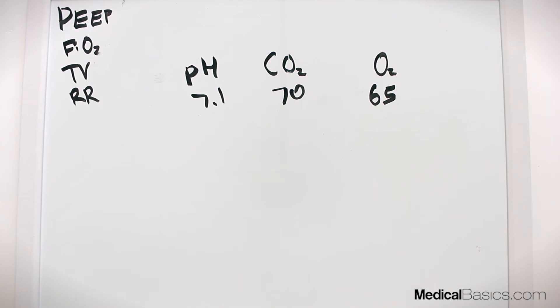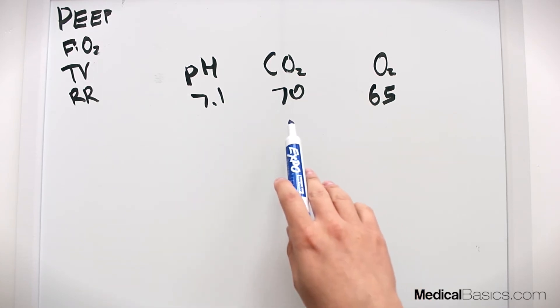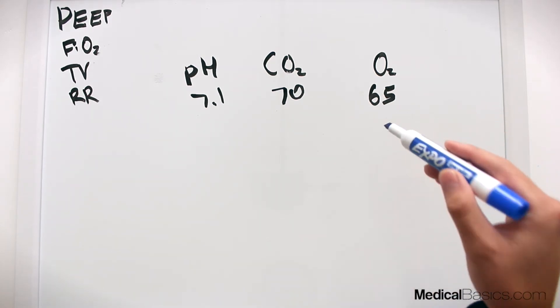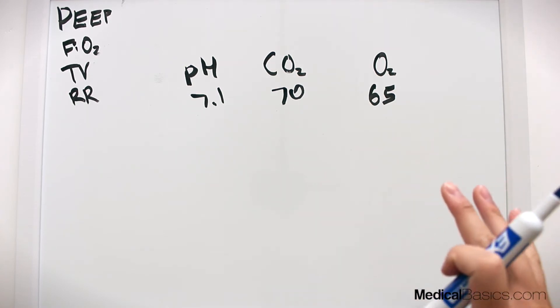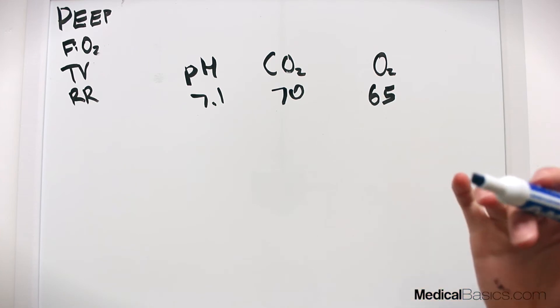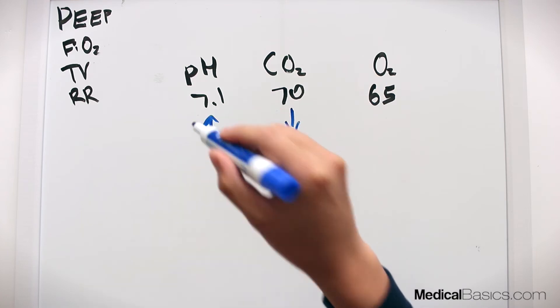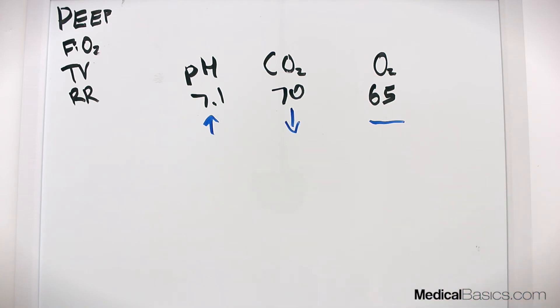Now let's look at an example. Let's say we have an ABG that looks something like this. We have a pH of 7.1, meaning they're acidemic. We have a CO2 of 70, which means they're retaining quite a bit of CO2, and we have oxygenation of 65. And this is a PaO2, so anything above 60 is typically pretty okay. So for this individual what would you want to change? Well I want to drive this down and I want to drive this up. And I'm okay with the oxygenation at this level of 65. So what do I do now? How do I fix this?